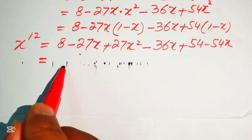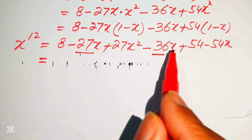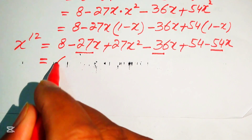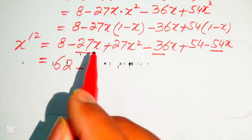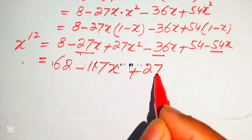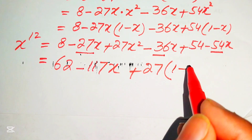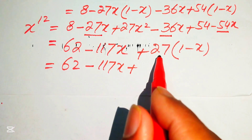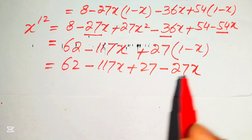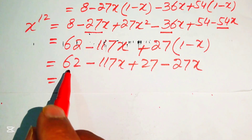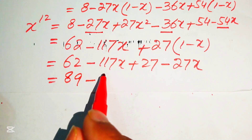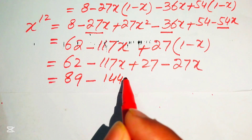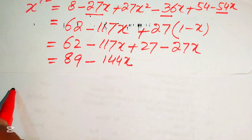Combining like terms: constants 8 + 54 = 62; x-terms −27x − 36x − 54x = −117x; and we still have 27x². Back-substituting x² = 1 − x gives 27(1 − x) = 27 − 27x. So x¹² = 62 + 27 − 117x − 27x = 89 − 144x.